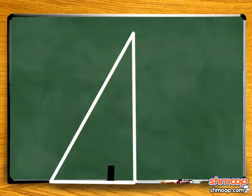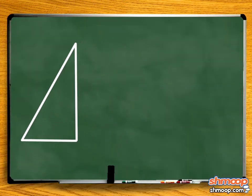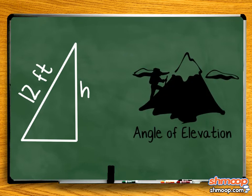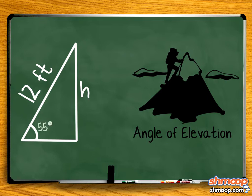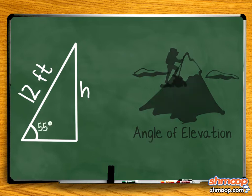We can label our variable, the height of the building, cleverly, H. Darren knows that the ladder he used to get up to the roof is twelve feet long, and the angle of elevation — the angle between the ladder and the ground as he puts the ladder against the shack — is 55 degrees.